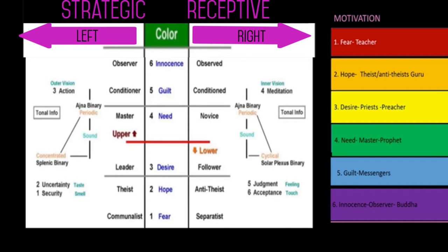And then there's also these keynotes around the variable. And in this particular example that I'm looking at here, this has to do with the motivation color. So what we just went over, the fear, the hope, desire, need, guilt, and innocence. And then the left and the right, these are the keynotes for the left variable and the right variable.